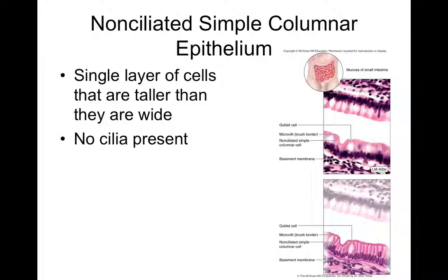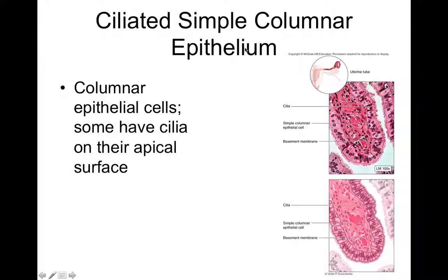Ciliated simple columnar epithelium lines the ovarian tubes, also called the uterine tubes or oviducts. Cilia move materials across the cell surface. In the uterine tubes, the cilia waft the egg from the ovary through the uterine tube towards the uterus, where implantation of a potentially fertilized egg could occur.